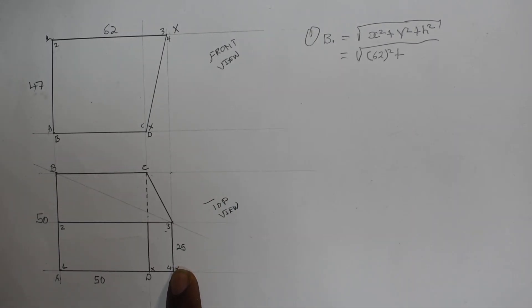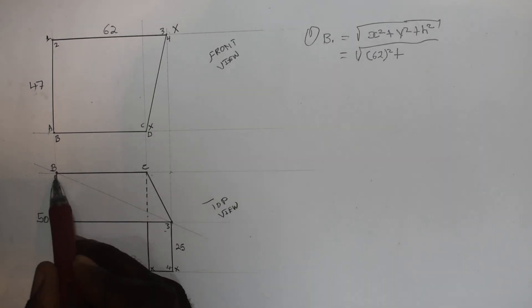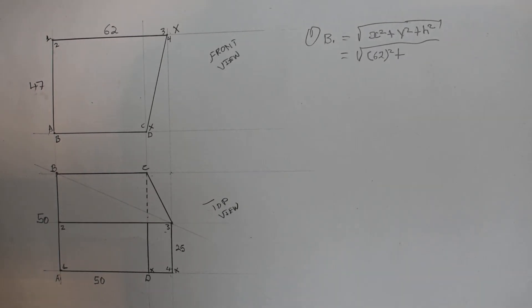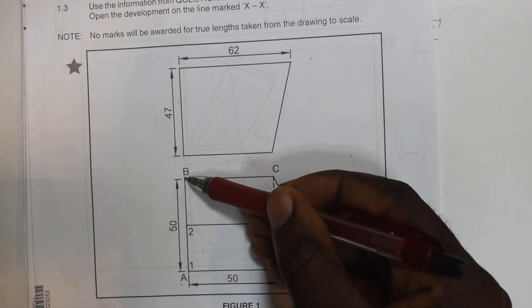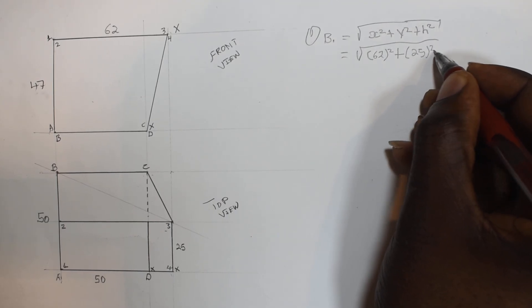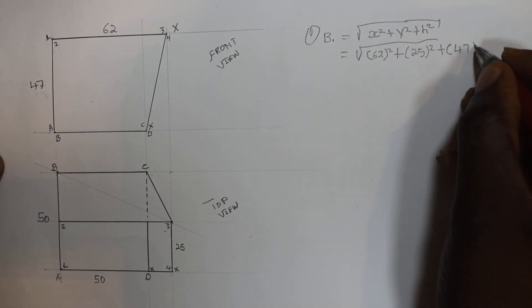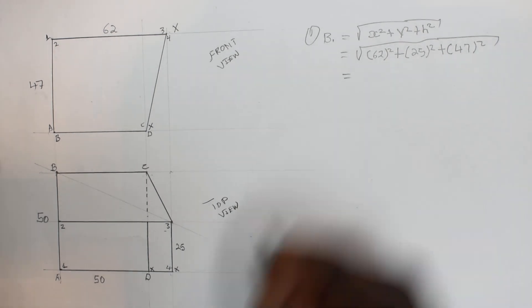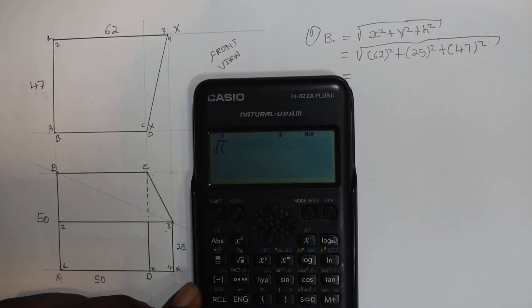From the unknown point to point 3, we are told from A to B is 50 millimeters. So from the center — half of 50 is 25 — I substitute y as 25 squared. Plus the height, which is 47, so 47 squared. You can punch this into your scientific calculator: square root of 62 squared plus 25 squared plus 47 squared.